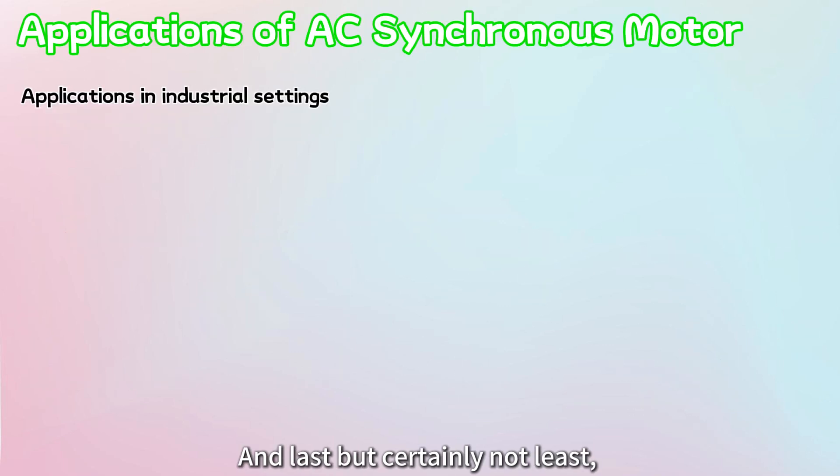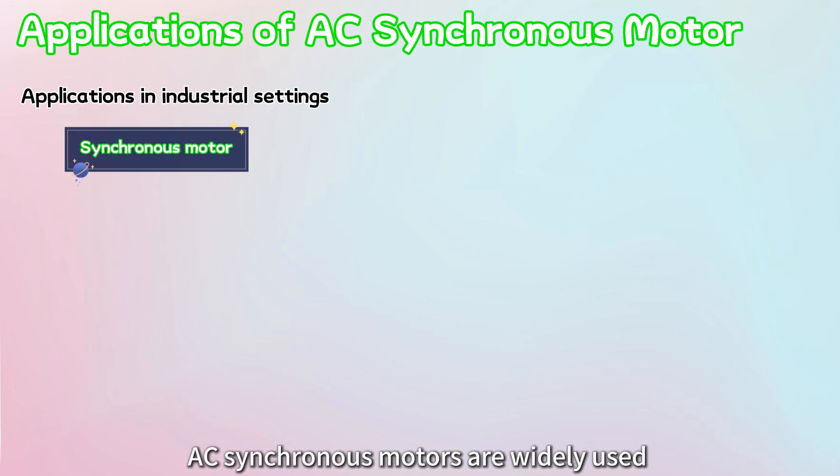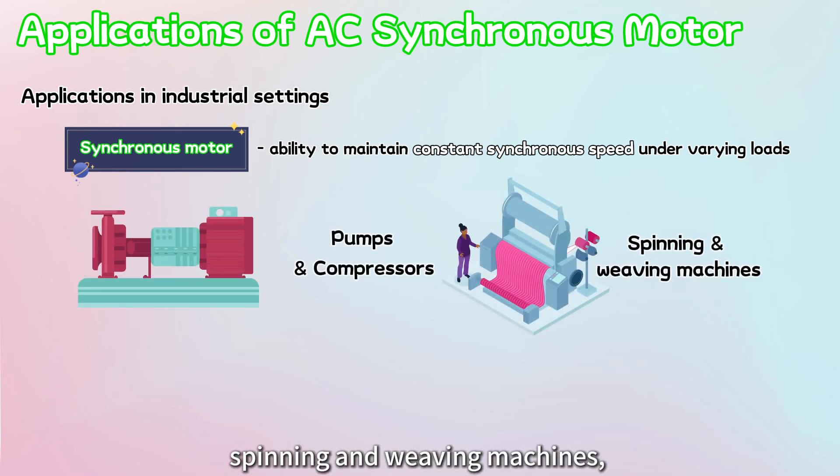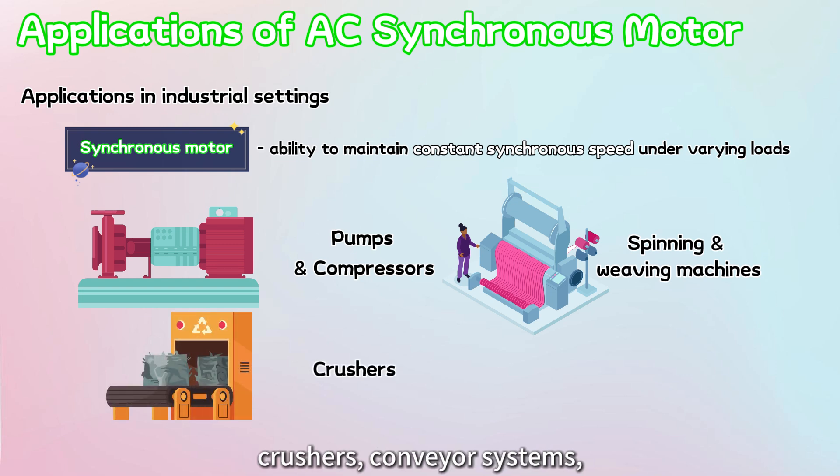And last but certainly not least, let's talk about the applications of AC synchronous motors. AC synchronous motors are widely used in various industrial settings due to their ability to maintain a constant synchronous speed under varying loads. They are used in pumps, compressors, spinning and weaving machines, crushers, conveyor systems, and many other equipment.